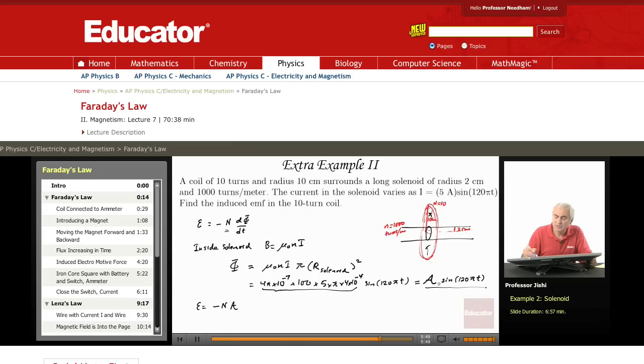The derivative of this is A, and the derivative of sine is cosine. But you get 120π, so you get 120πA times cosine 120πT. This is the induced EMF in the 10-turn coil.